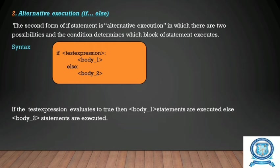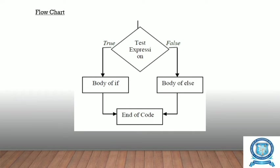Now let us see about the alternative execution, that is the if-else statement. The second form of the if statement is the alternative execution statement, in which there are two possibilities and the condition determines which block of statement should be executed. The syntax is: if test expression, then body 1 will be executed; if the test expression is true, body 1 executes; if false, the else part — body 2 — will be executed.